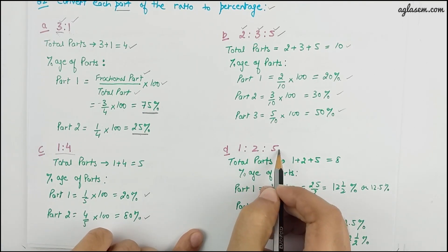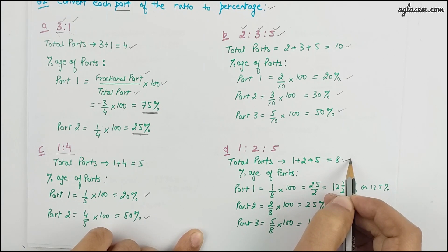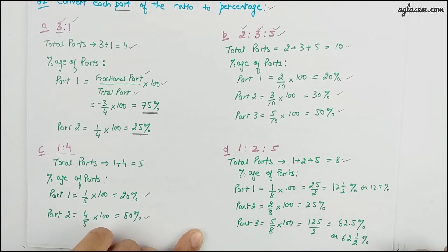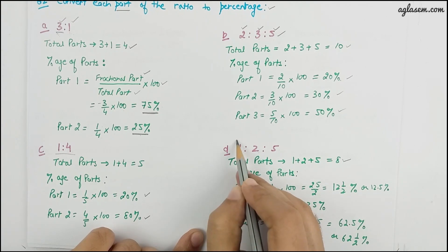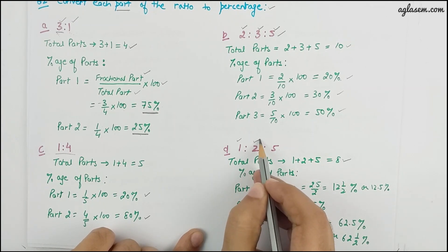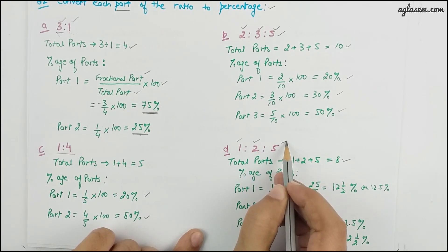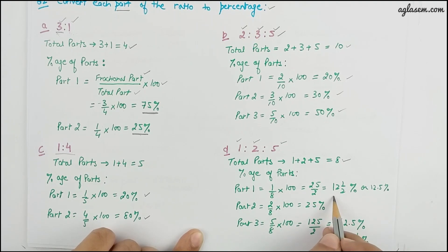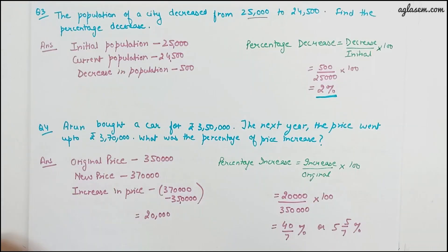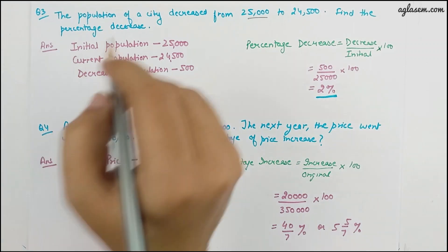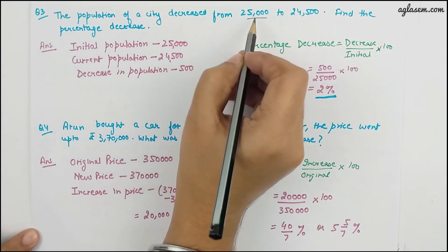For ratio 1:2:5, total parts are 8. Percentages are: 1 divided by 8 into 100, 2 divided by 8 into 100, and 5 divided by 8 into 100. This gives 12.5 percent, 25 percent, and 62.5 percent respectively.